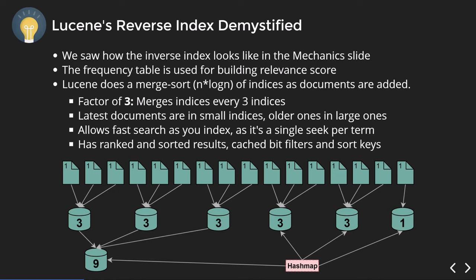Let's look at how Lucene stores those indices on disk. The frequency table is used for building relevance scores. Lucene merges every three indices into a new index. This factor of three is a default — you can change it to five, six, or anything that suits the type of data you store.